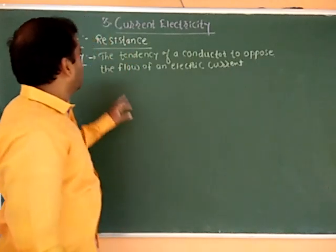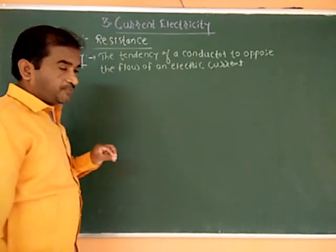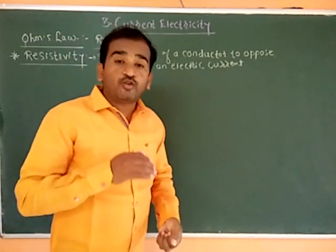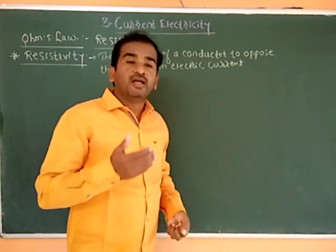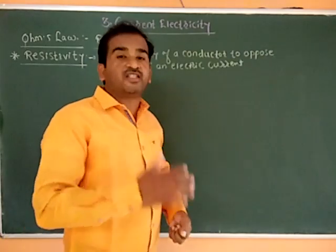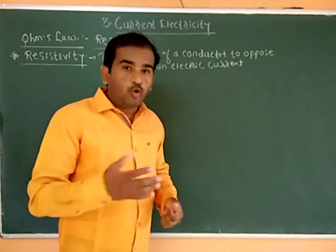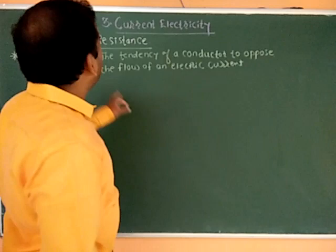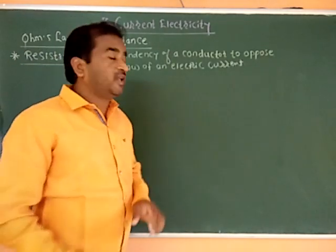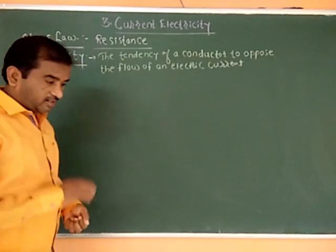This property is known as resistivity. Resistivity can be expressed mathematically. Let us look at the resistance of the conductor.